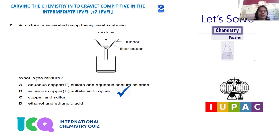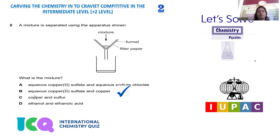The solution drains and is collected in the beaker. So what kind of mixture can be separated? Four options are provided. Option A is aqueous copper sulfate and aqueous sodium chloride. Since both compounds are water soluble, we can't separate those solutions by filtration. Option B is aqueous copper sulfate and copper metal — one is solid and the other is liquid, so it is obvious that filtration can separate the mixture. Filtration is very helpful to separate solid from liquid, so option B is the correct answer. Let's confirm by checking the other options.